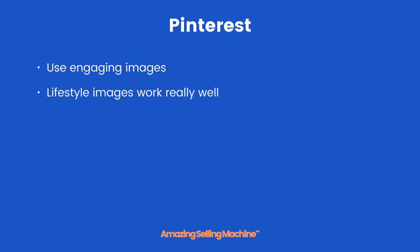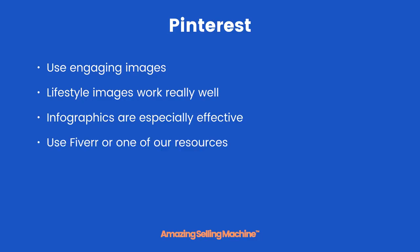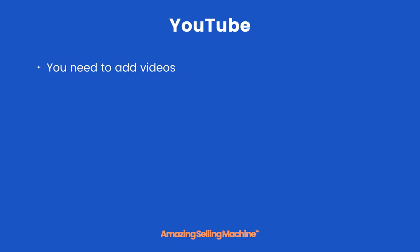Pinterest. Use engaging images — lifestyle images work really well. For the silicone spatula example, an image of someone actually using the spatula to cook works great. Infographics are especially effective; basically an infographic is a picture with text content on the picture itself. For infographics and lifestyle images, use Fiverr or one of the resources from inside the private vault. Also repin other related images — this is the fastest and easiest way to add images to your boards and keep your account active.